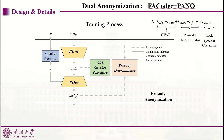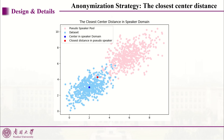The module can converge in around five epochs as the data dimension of the prosody is not large. The strategy is also important for anonymization. How to choose the right pseudo speaker to anonymize the dataset? Our method is named the closest center distance. For each dataset, we calculate its center in the speaker domain, and we will pick the one in the pseudo speaker pool that is closest to that center, using this pseudo speaker to anonymize the whole dataset.